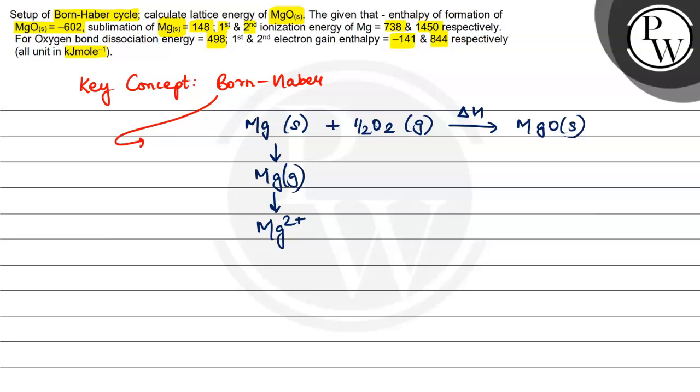Similarly, what will happen to half of oxygen? Half of oxygen will go to oxygen gas through atomization, and then it will go into O 2 minus. And these two together, then with the help of lattice energy, will form MgO.